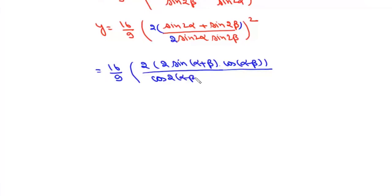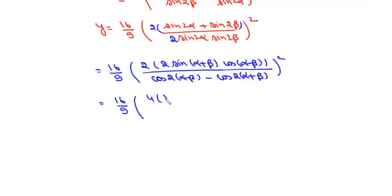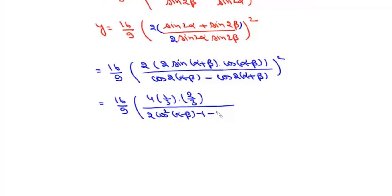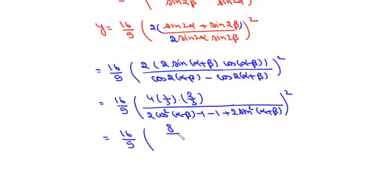...sin(α+β)·cos(α-β) and cos(2α+β), whole squared. This gives (16/9) × 4. Now sin(α+β) is given as 1/3 and cos(α-β) is 2/3. In the denominator, cos(2(α-β)) = 2cos²(α-β) - 1, and we write this as -1 + 2sin²(α+β).